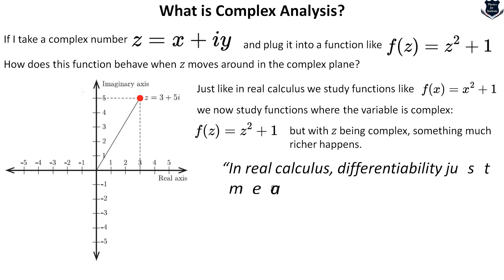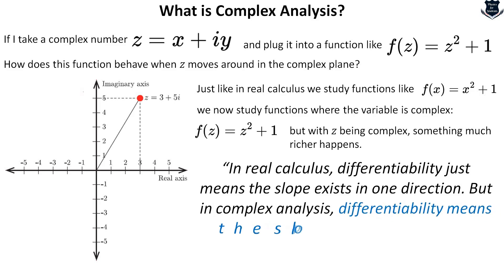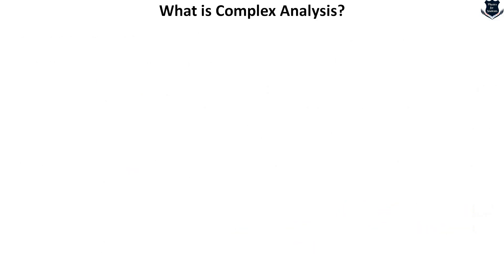What we can say till now is that in real calculus, when we do differentiation it just means the slope. Left to right it moves upwards in one direction. But in case of complex analysis, differentiability means the slope exists in every direction in the complex plane. How the visualizations look like, we will cover in the next part.